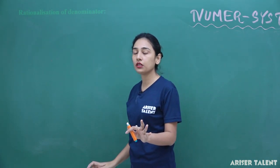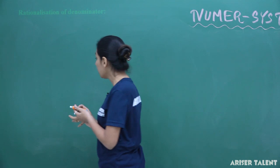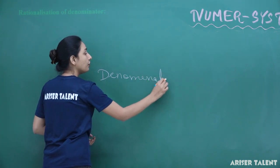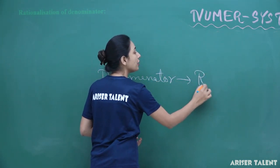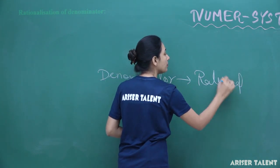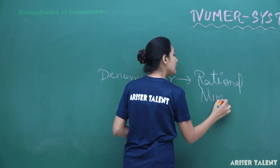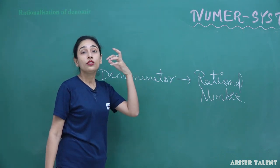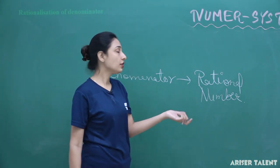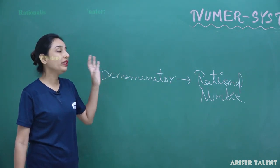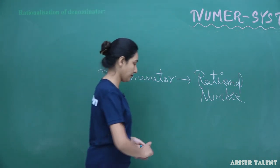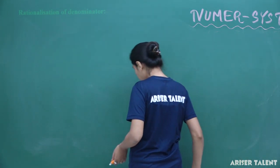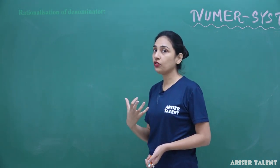What is the process? Rationalization of denominator. What is the meaning of rationalization of denominator? That means the denominator has to be a rational number. It does not mean the numerator must be rational — you may have an irrational numerator — but you should try for your denominator to be at least rational. This is the rationalization of denominator.